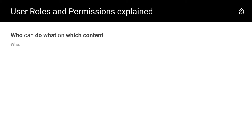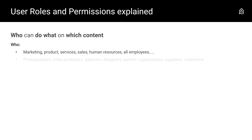Let's start with the 'who' part. If you make a list of all the different types of people that need access to your Picturepark, who would be on that list? Starting with people within the different departments of your organization, you may want to think about people working on marketing, product or services, sales, human resources, etc.